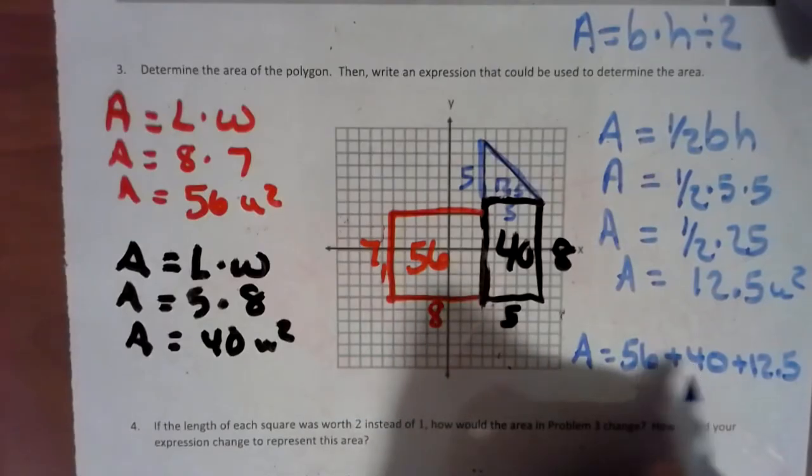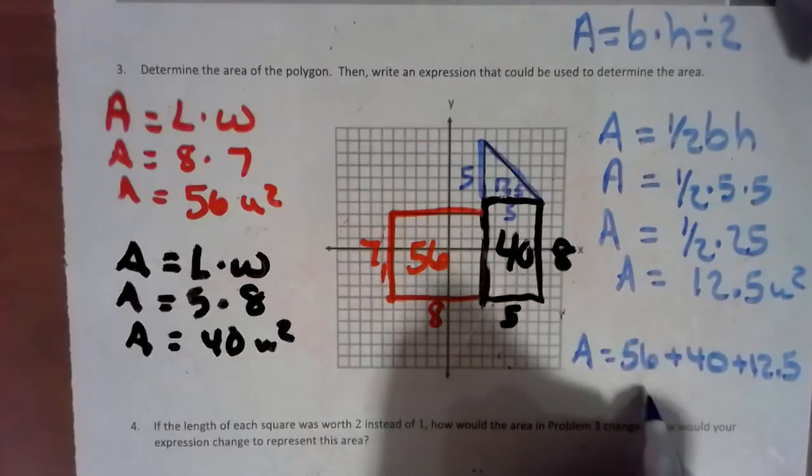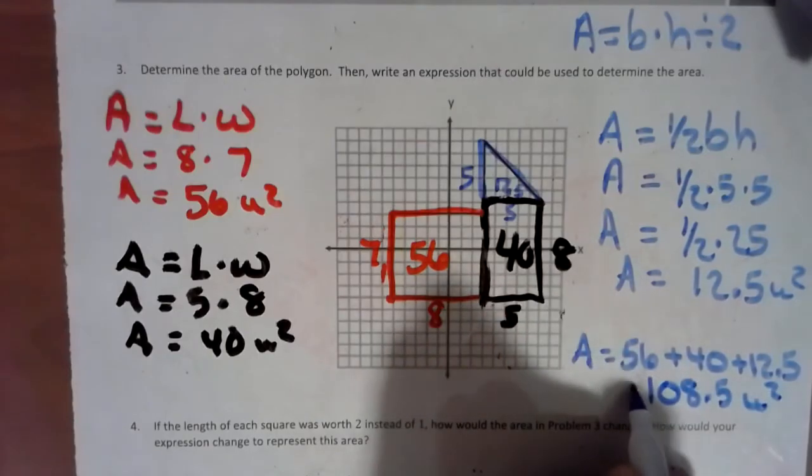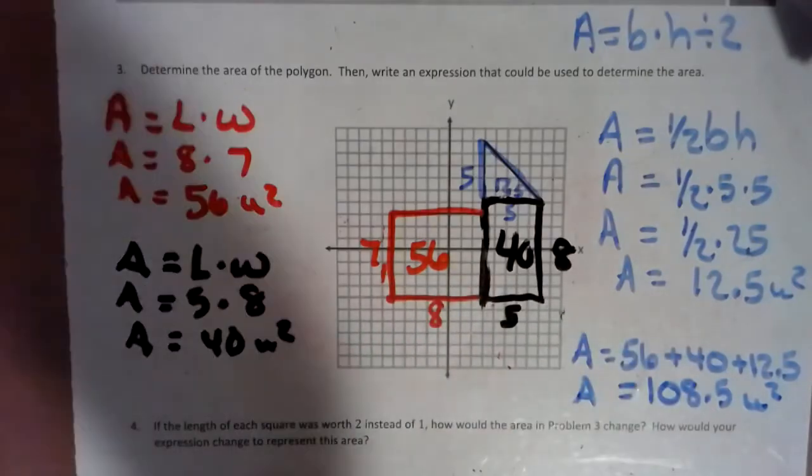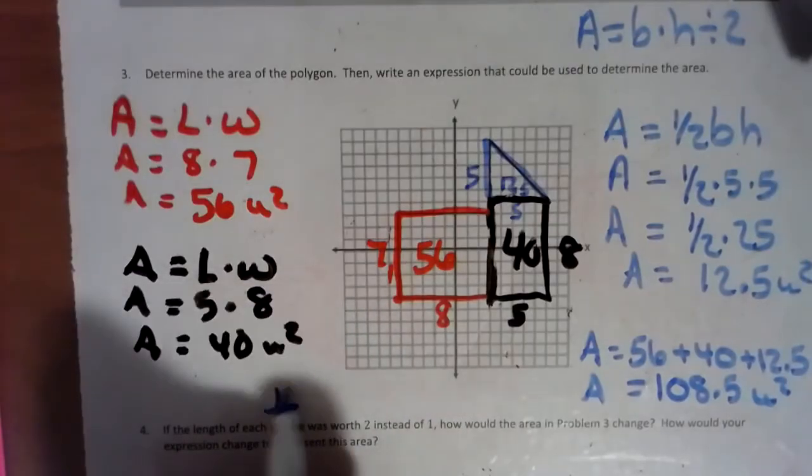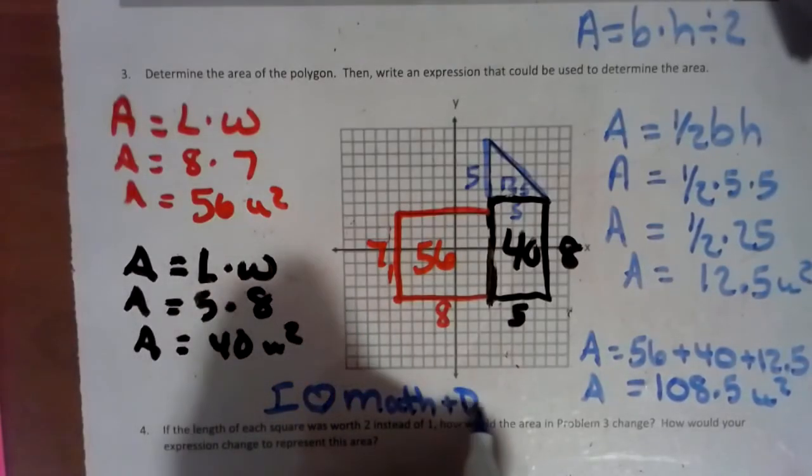So, 50, 90, 96, 106, 107, 108, and 5 tenths units squared is the total area of that irregular shape. Rectangle, rectangle, triangle. And, as always, I love math and diet.